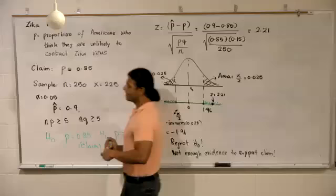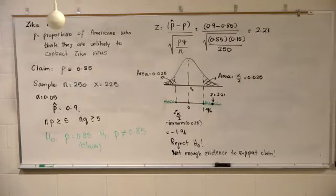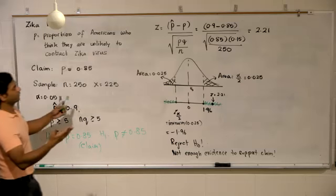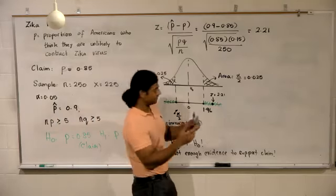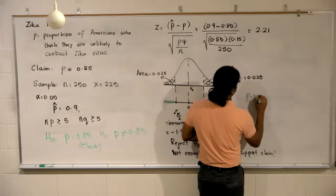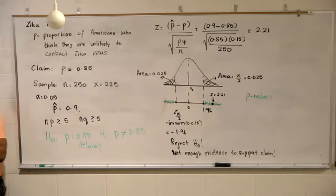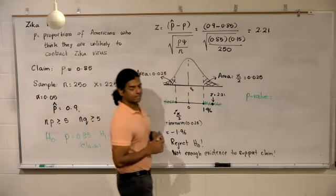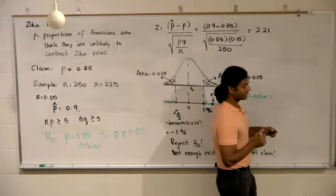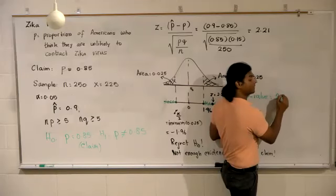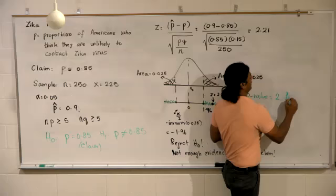What is the other way of obtaining a conclusion? Which will give you the p-value. This is a two-tail test. So what is the p-value for a two-tail test? It is two times.